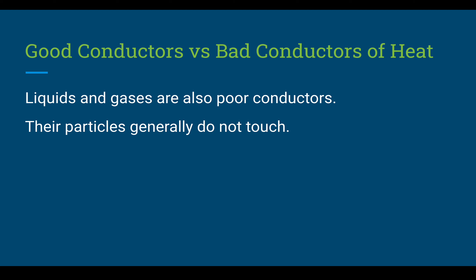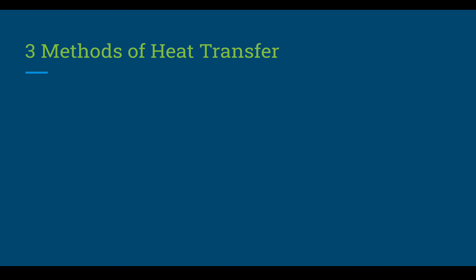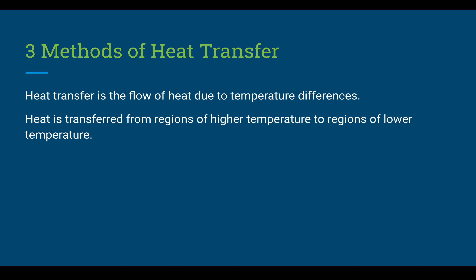Liquids and gases are also poor conductors since their particles are further away from each other, as shown by the diagrams. There are three main methods of heat transfer, but first — what is heat transfer? Heat transfer is the flow of heat due to temperature differences, and it generally flows from higher to lower temperatures.